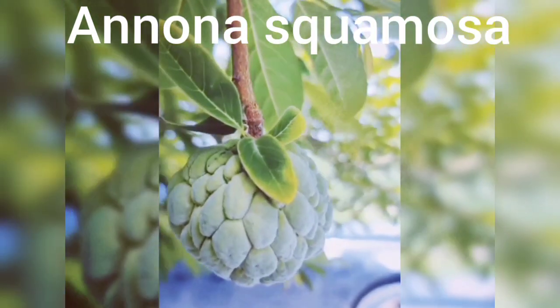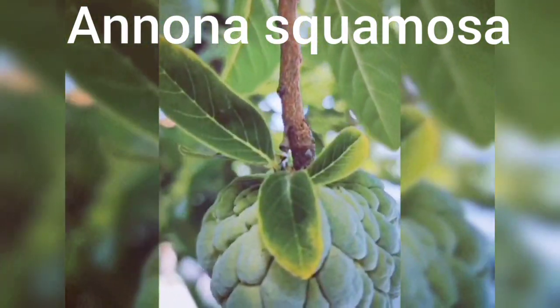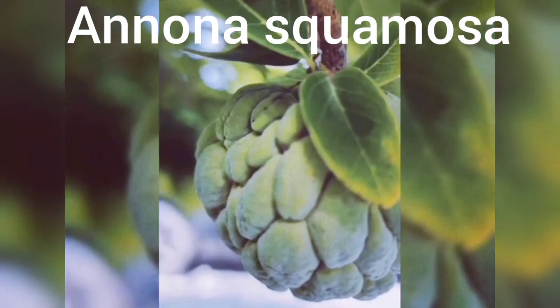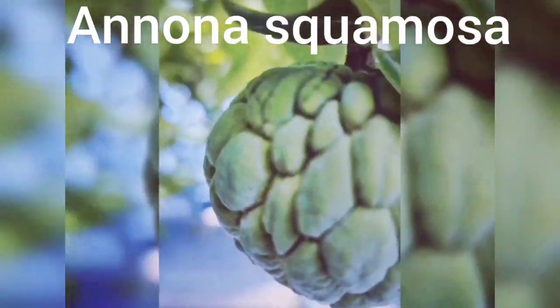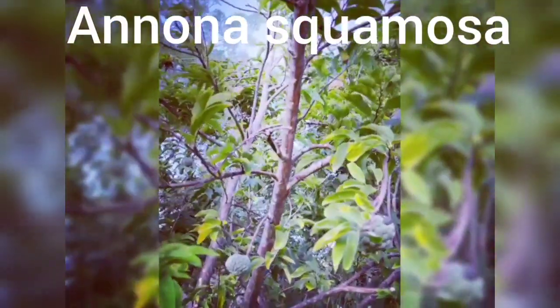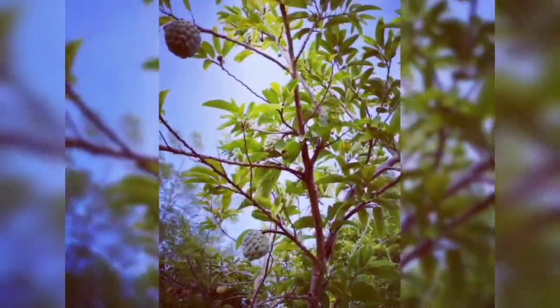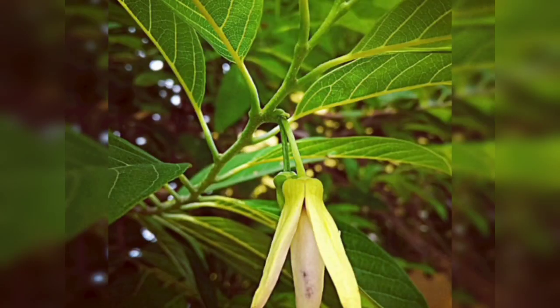The most popular variety is Anona squamosa, commonly known as custard apple. It is a slow-growing, deciduous shrub or small tree with a rounded or open crown, can grow up to 6 meters tall. It is native to tropical Americas, West Indies and Caribbean, and widely distributed among Indonesia, Thailand and Taiwan. It was introduced to Southern Asia before 1590.